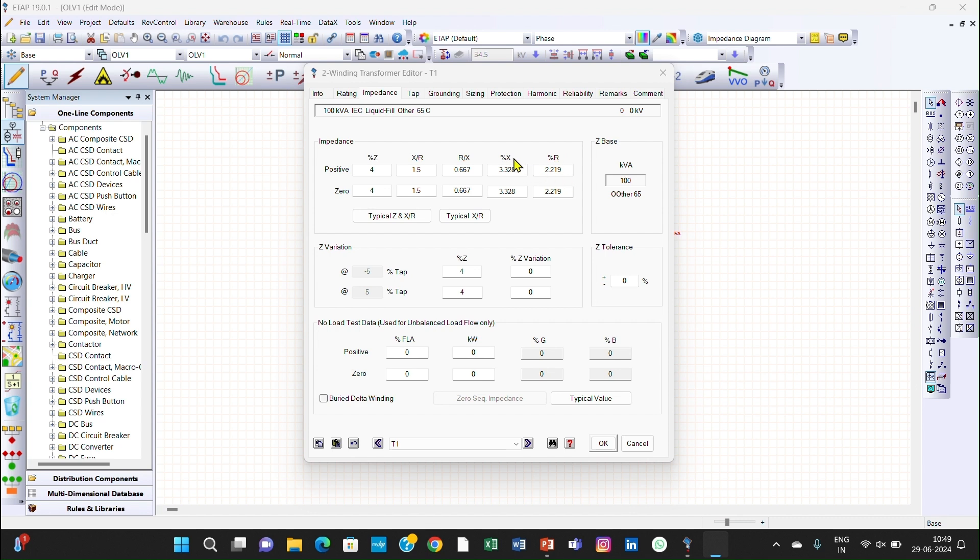Exactly the same. Percentage X is exactly 3.328. Okay, our manual calculations are completely matching with the ETAP results. Thank you.